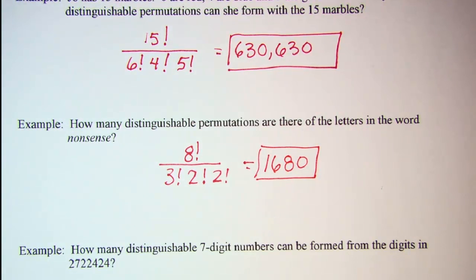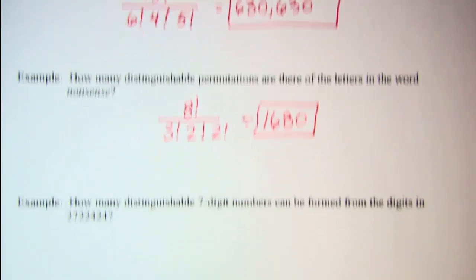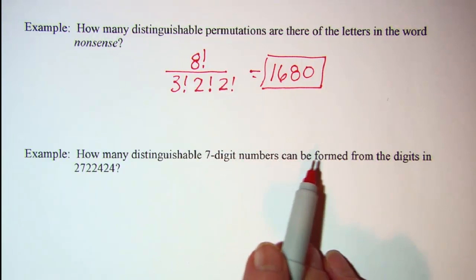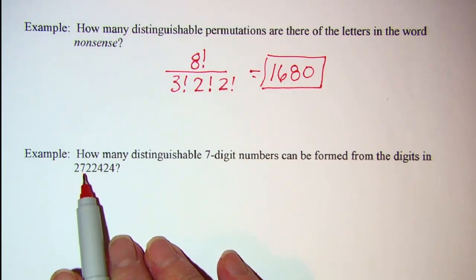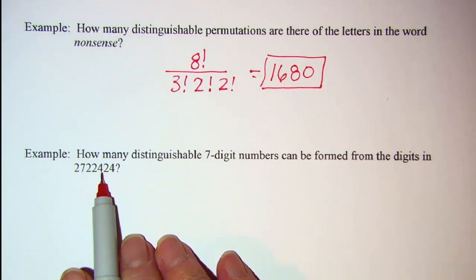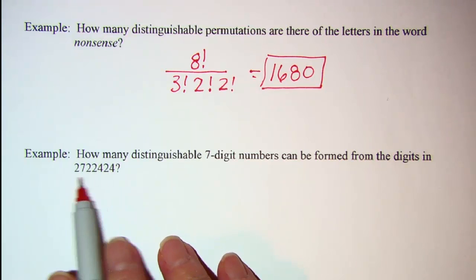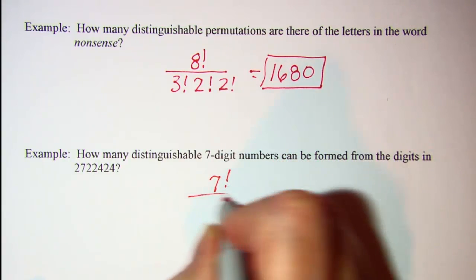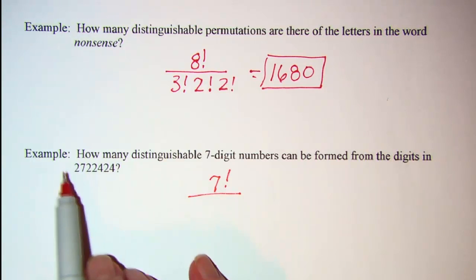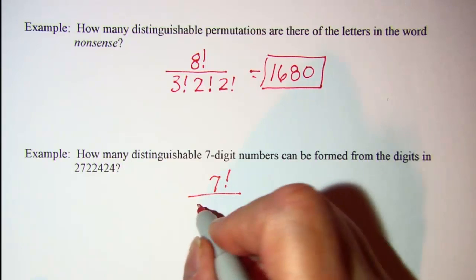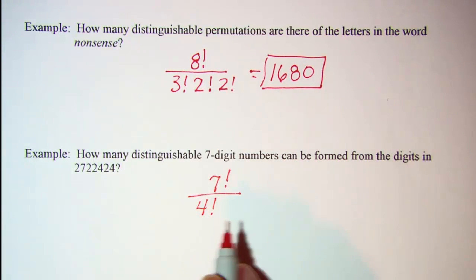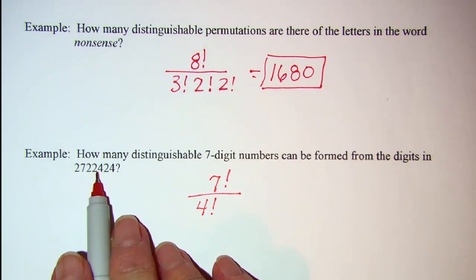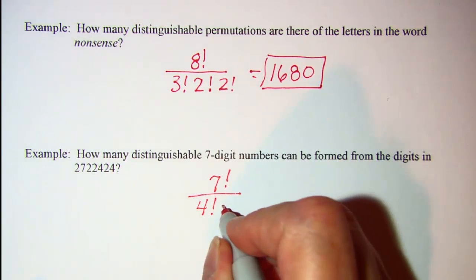Let's do one more. How many distinguishable 7-digit numbers can be formed from the digits in this number, 2722424? Now I have 7 digits here, so I have 7 factorial divided by, I have 1, 2, 3, 4 twos, and that's 4 factorial. And then I have just a single 7, so I don't have to worry about that, but I have 2 fours, so that's 2 factorial.